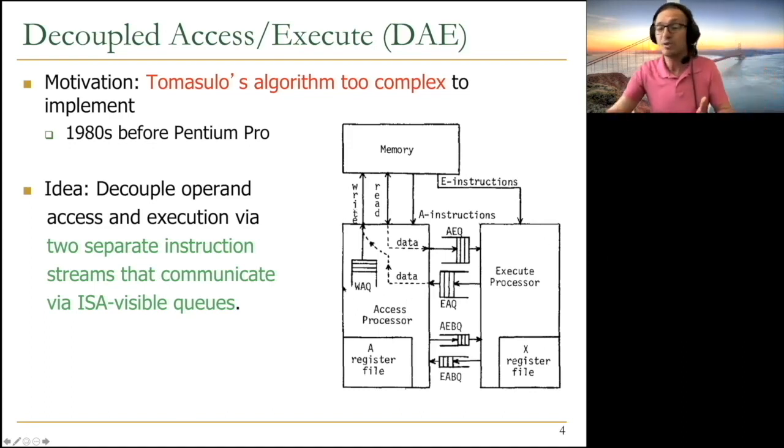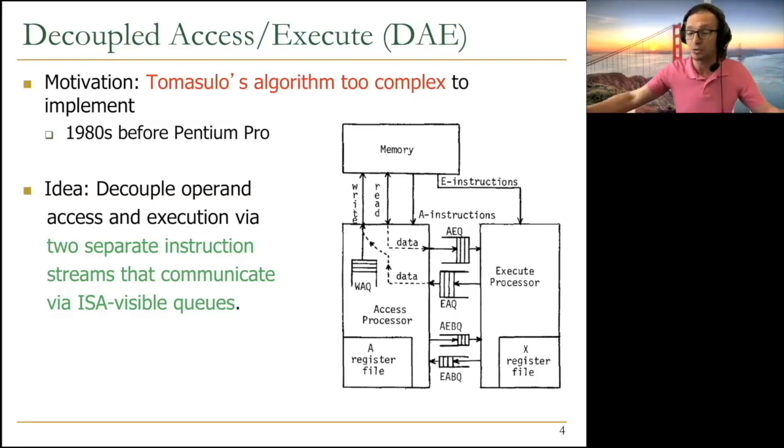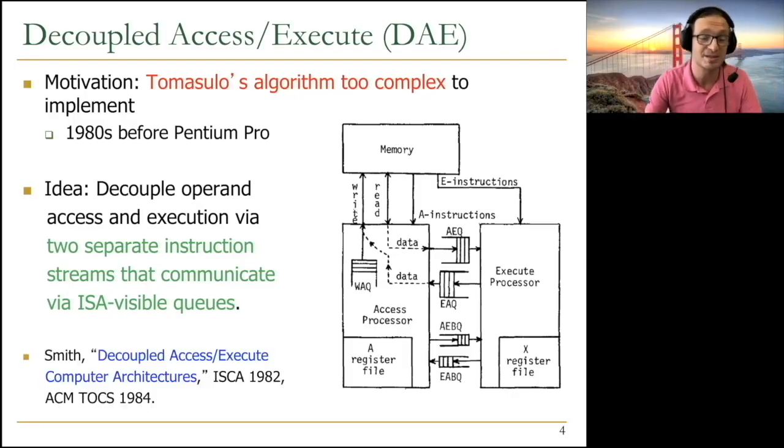This way, without having full-blown out-of-order execution, you don't need to stall between the access and execute processors. While the memory operation is going, you can do computation and vice versa. That's the beauty of it. It was introduced by Jim Smith in the seminal paper in ISCA 1982, and its basic principles are applied in computing systems today, but not exactly as it was envisioned.